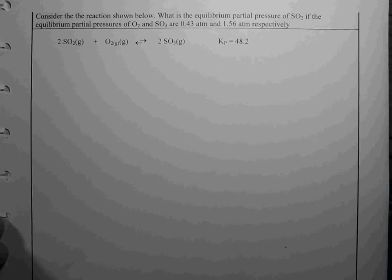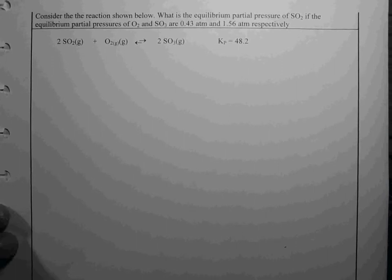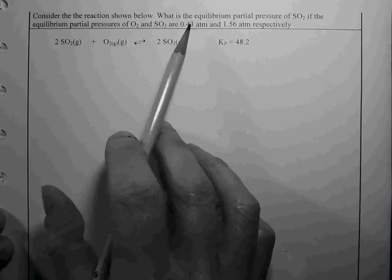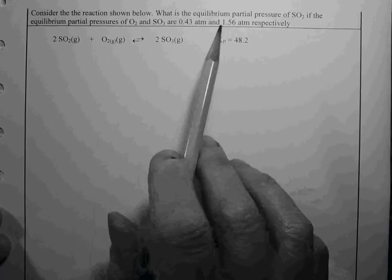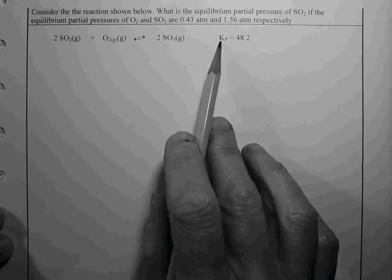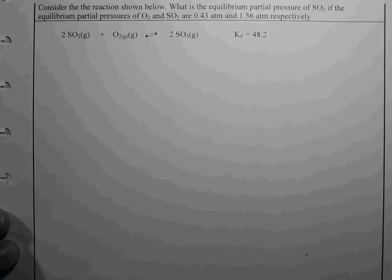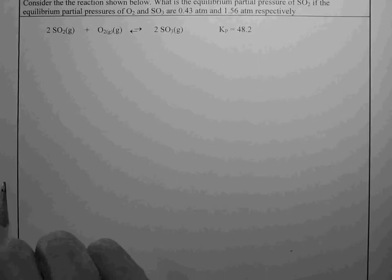An equilibrium problem where we're given equilibrium concentrations of two species and the equilibrium constant value. We're asked to solve for the amount of SO2, our reactant.